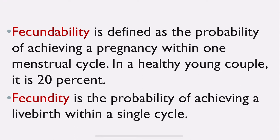Fecundity is the probability of achieving a live birth within a single cycle. Fecundability is only about conceiving, whereas fecundity means the entire pregnancy is completed and a healthy baby — a live birth — is achieved within a single cycle. To remember: if they conceive within one cycle, it is fecundability; if they conceive and give a live birth within the first cycle, it is fecundity.